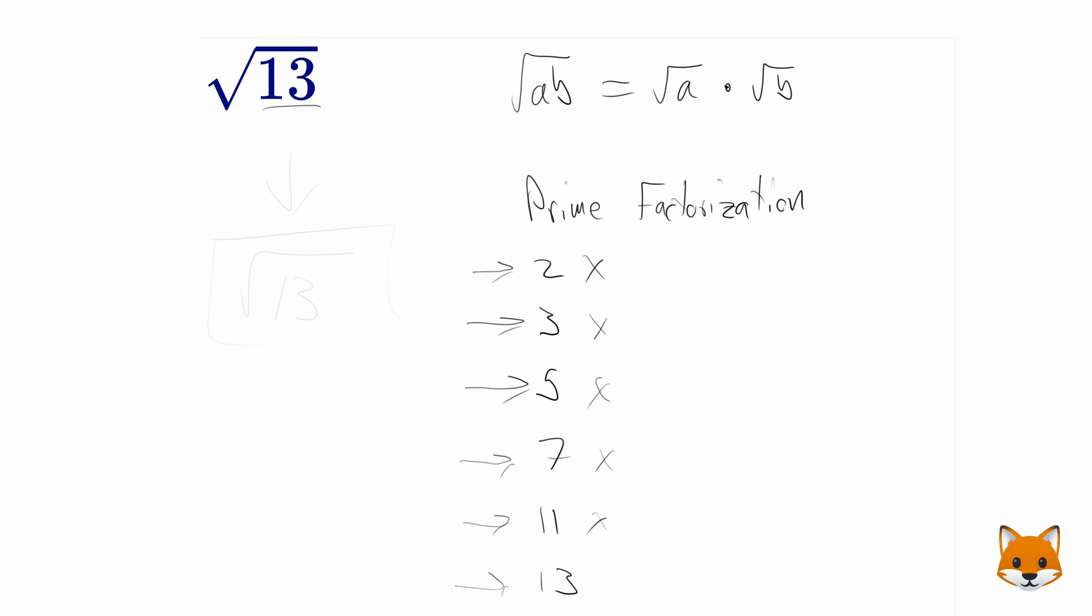Not divisible by 11. Now we got to 13, and what that means is that 13 is itself a prime. It cannot be divided by anything else, which means that the simplest way to write the square root of 13 is just the square root of 13.